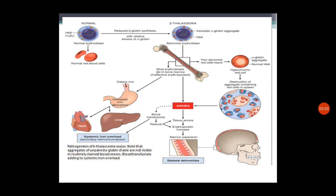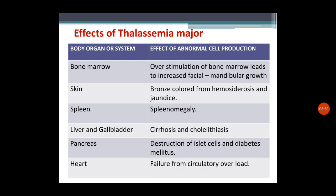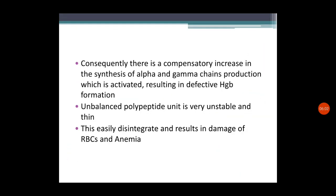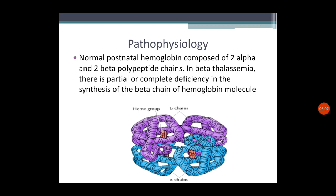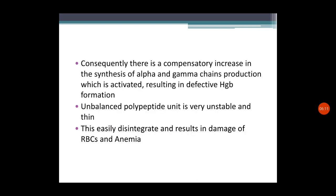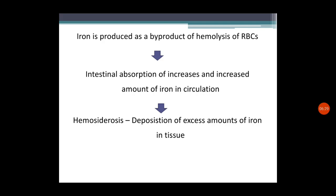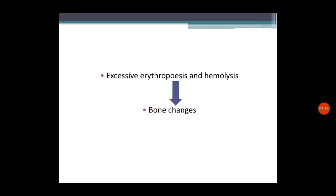In summary, the pathophysiology of thalassemia major involves defective synthesis of one chain type, with a compensatory increase in the other chain or production of gamma chains. This makes the hemoglobin unit unstable; the chains disintegrate causing hemolysis, producing more iron. Intestinal iron absorption also increases because the body perceives anemia and compensates. This results in hemosiderosis, while bone changes occur due to excessive erythropoiesis and hemolysis.